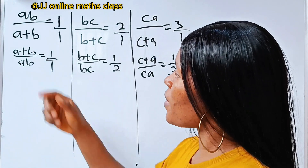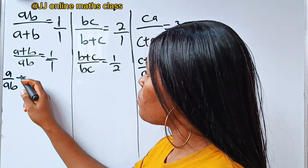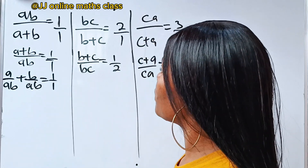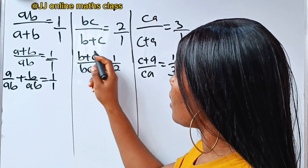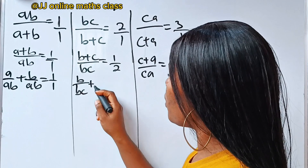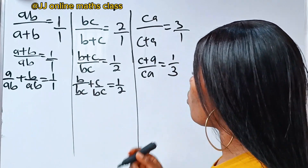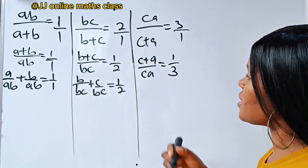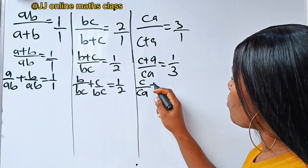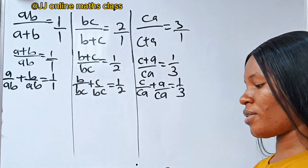We can further express this as: a over ab plus b over ab is equal to 1 over 1. Then here, we can express this as b over bc plus c over bc is equal to 1 over 2. Then for this side, we have that c over ca plus a over ca is equal to 1 over 3.